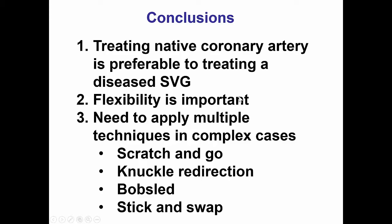The second lesson is that flexibility is important in challenging cases like this. When retrograde crossing does not work, as was the case here, it is critical to switch to a different strategy — namely, antegrade dissection and reentry. Multiple techniques were needed: the scratch and go technique to resolve proximal cap ambiguity; then dissection with the knuckle wire, then with the CrossBoss. Once the CrossBoss entered a small side branch, knuckle redirection was used to direct it into the distal right coronary artery. We then moved the reentry zone, using the so-called Bob's lead technique to advance the Stingray balloon further distally. Finally, we used the stick and swap technique, switching the Stingray wire for a polymer-jacketed wire, to achieve reentry into the distal true lumen.